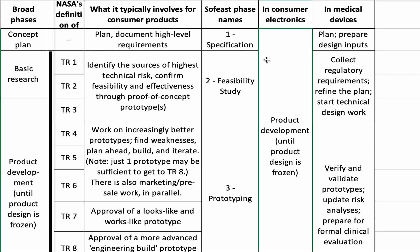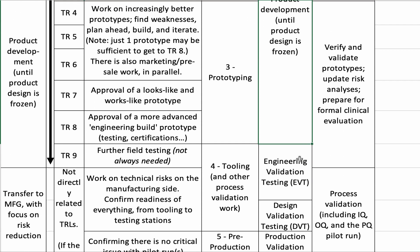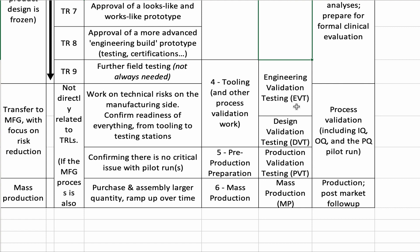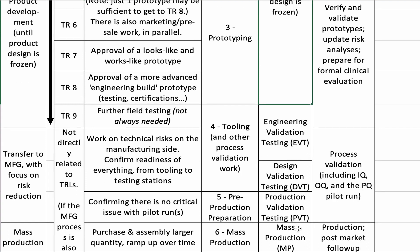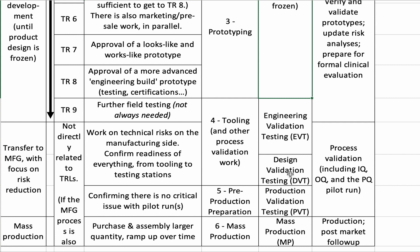Consumer electronics — again, very high level view. All of this is PD, product development. Once product design is frozen, you go into three stages of validation testing, each time making a few samples, then more samples to validate, and even more samples to validate, until you get to the point where you say it's ready for mass production, there are no critical issues, no real major issues, and we're ready to ramp up, and over time we'll keep continuously improving. When I say consumer electronics, it's mass consumer electronics — supposed to be made in the hundreds of thousands or millions. EVT, DVT, PVT — we have some other documents on that.